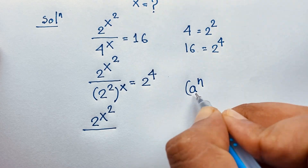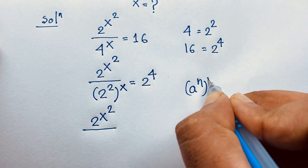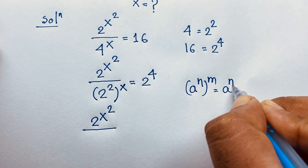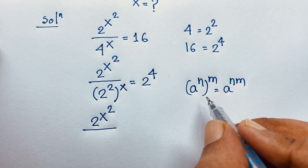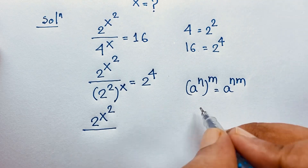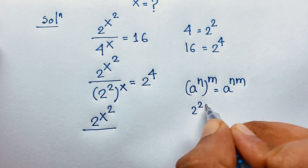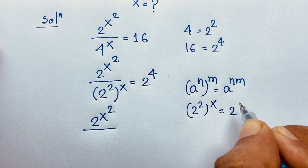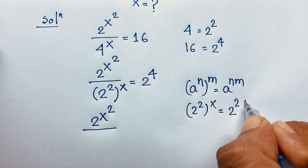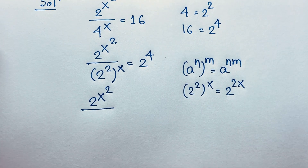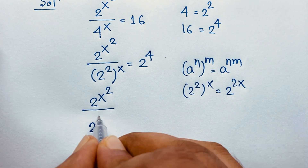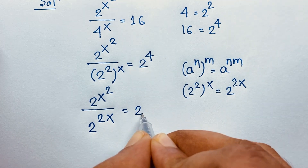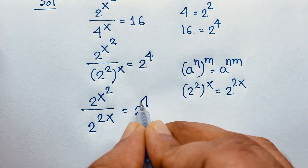The formula is: a to the power n over a to the power m equals a to the power n minus m. Applying this, 2 to the power 2 bracket power x gives 2 to the power 2x. So we get 2 to the power x squared over 2 to the power 2x is equal to 2 to the power 4.